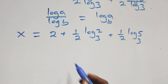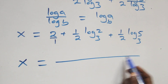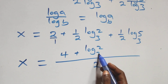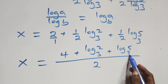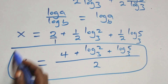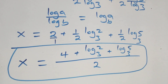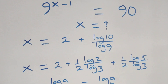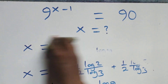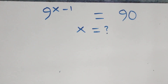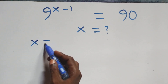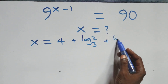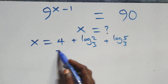We bring this together as one fraction. We have x equals to the same as 2 over 1. Combined, that gives us 4 plus log₃2 plus log₃5. That is the value of x equals to 4 plus log₃2 plus log₃5, all over 2. Let's check if this satisfies the given problem.